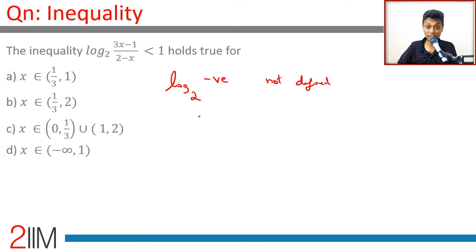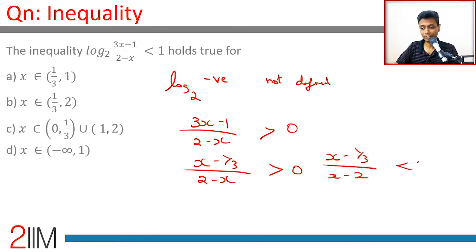So let's worry about that first. That means (3x - 1)/(2 - x) is greater than 0. Even 0 is not defined; log is defined only for positive numbers. Or (x - 1/3)/(2 - x) greater than 0, which is (x - 1/3)/(x - 2) less than 0, for log to be defined in the first place.